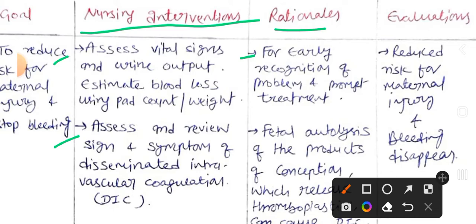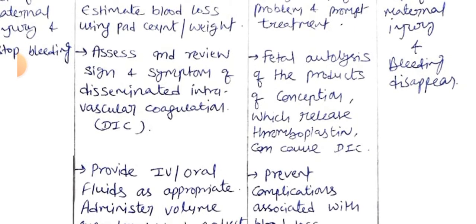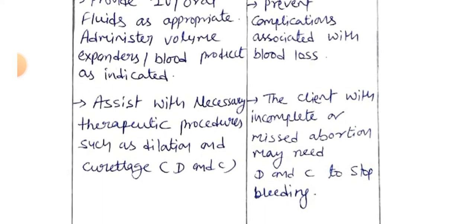The second intervention is to assess and review signs and symptoms of disseminated intravascular coagulation (DIC). The rationale is that fetal autolysis of the product of conception releases thromboplastin, which can cause DIC. Next, provide IV and oral fluids as appropriate and administer volume expanders and blood products as indicated, to prevent complications associated with blood loss. Also assist with necessary therapeutic procedures such as dilation and curettage (D&C), as clients with incomplete or missed abortion may need D&C to stop bleeding.